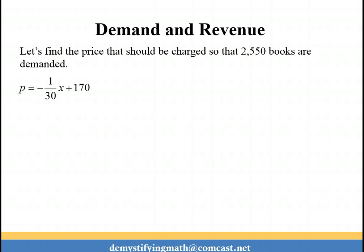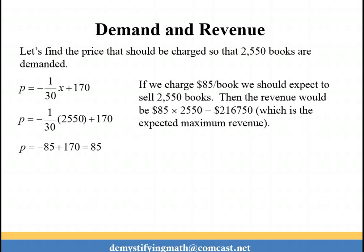Now let's find the price that we should charge so that we get our maximum amount of revenue, which means that we want our demand to be 2550 or our x value to be 2550. So let's plug that into our price per unit equation and solve for p. So I get $85 is the price that we should charge for this product so that we can reach our maximum revenue. Think about it this way, if we charge $85 per book and we expect to sell 2550 books, then all we would do is multiply 85 by the 2550 and that gives us our $216,750 which is the expected maximum revenue.